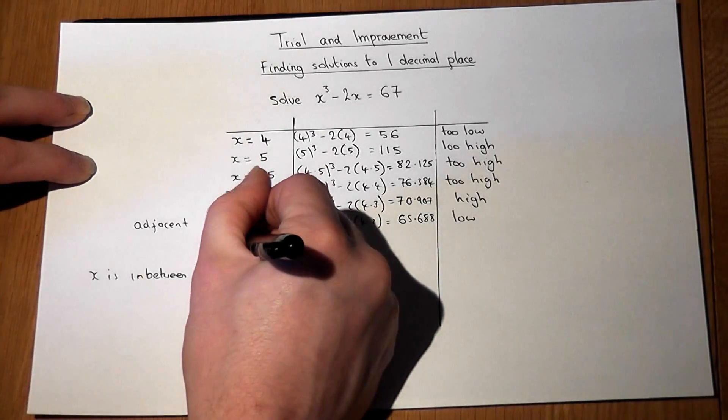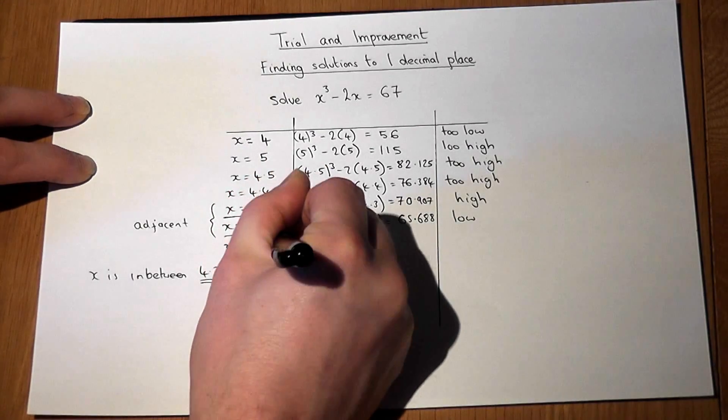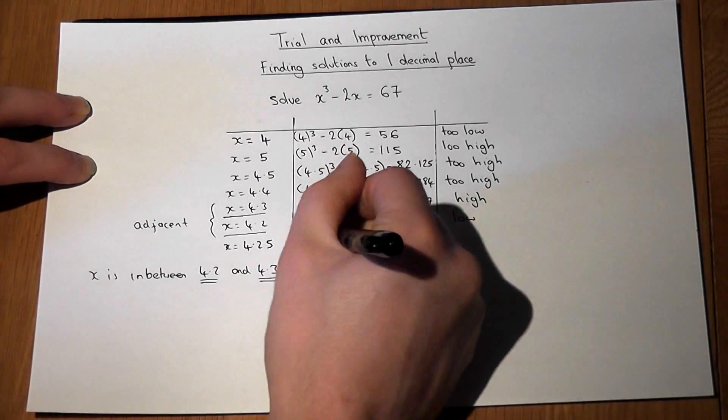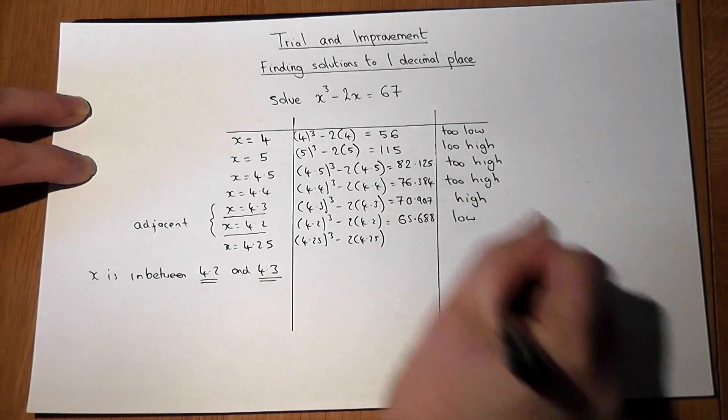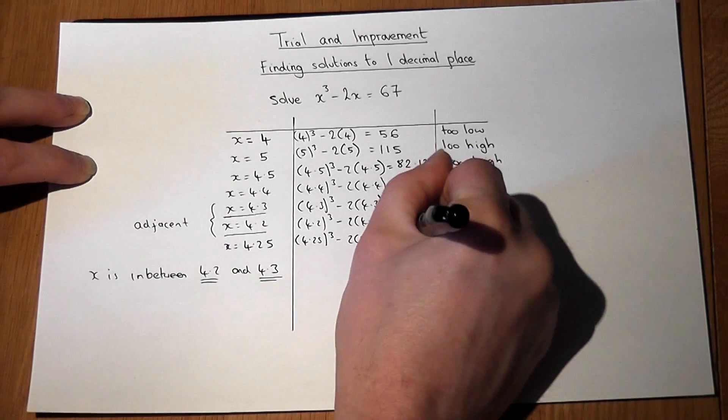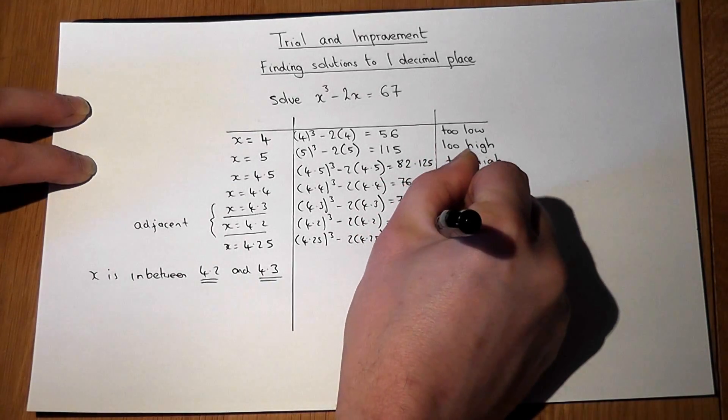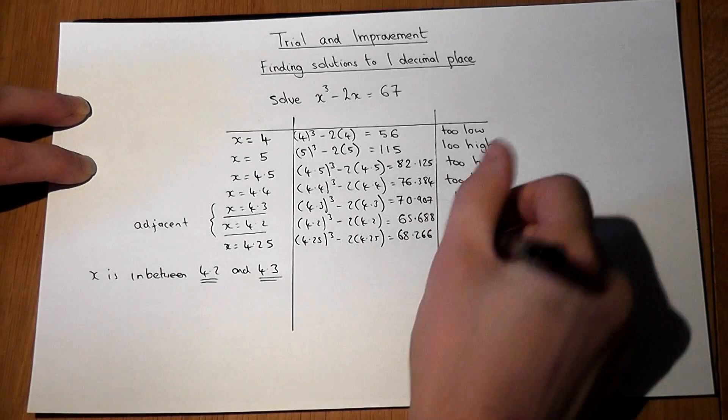So if I pick x equal to 4.25 and work out this value instead, it works out to be 68.266, which is too high.